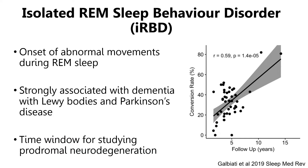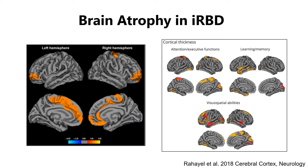Isolated REM sleep behavior disorder, or RBD, is a sleep disorder characterized by the loss of REM sleep muscle atonia and the onset of abnormal movements and vocalizations during REM sleep. It is strongly associated with synucleinopathy, and most patients with isolated RBD go on to develop dementia with Lewy Bodies or Parkinson's disease during follow-up. It therefore represents an important time window to study prodromal neurodegeneration. We know that patients with isolated RBD already show brain atrophy, and that this brain atrophy correlates with clinical features, particularly cognitive impairment.